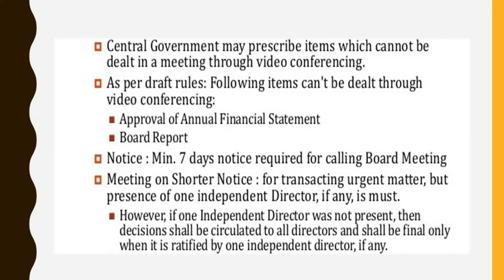A notice should be given to all board meeting members before seven days of the meeting. The meeting can also be conducted on a shorter notice for transacting urgent matters, but it is only conducted in the presence of one independent director. If the independent director is not available, the decisions of that meeting should be circulated to all the directors of the company, but the final decision is made by the independent director.